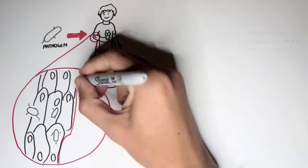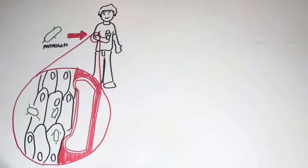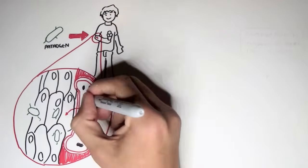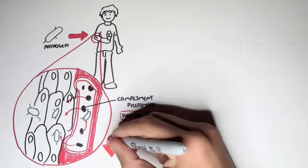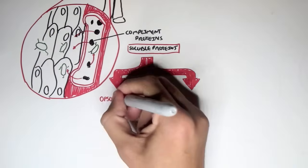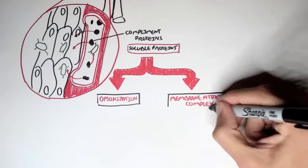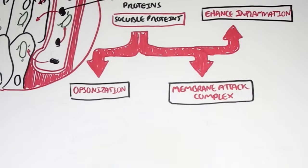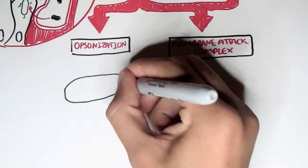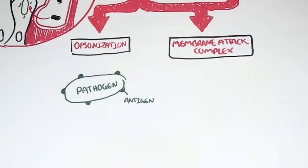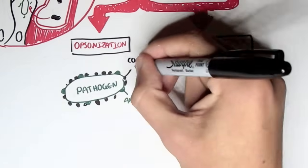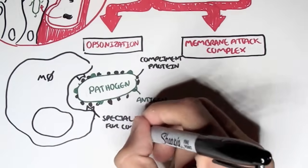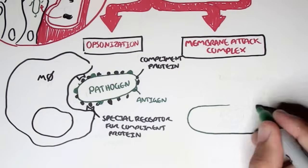When the pathogen successfully infiltrates our body, we have complement proteins in the bloodstream. These complement proteins are part of the innate immune system; they are soluble proteins circulating in the blood vessels. What these complement proteins do includes performing opsonisation, making a membrane attack complex, and enhancing inflammation. Opsonisation is a process where complement proteins coat the outer surface of the pathogen, which allows phagocytes — in this case a macrophage — to engulf the pathogen much more easily, because the macrophage contains special receptors for specific complement proteins.